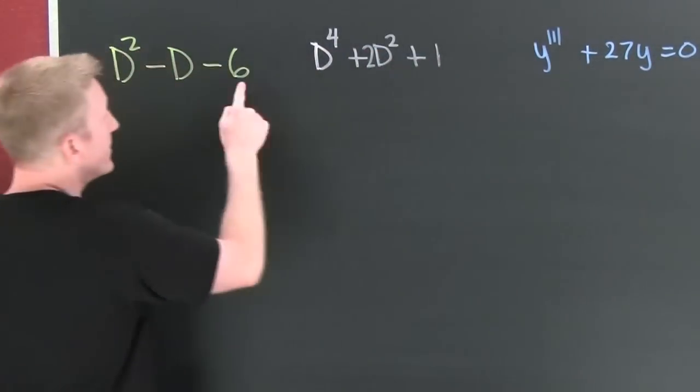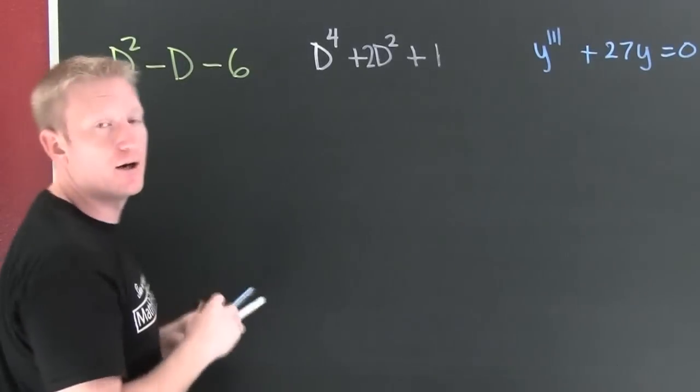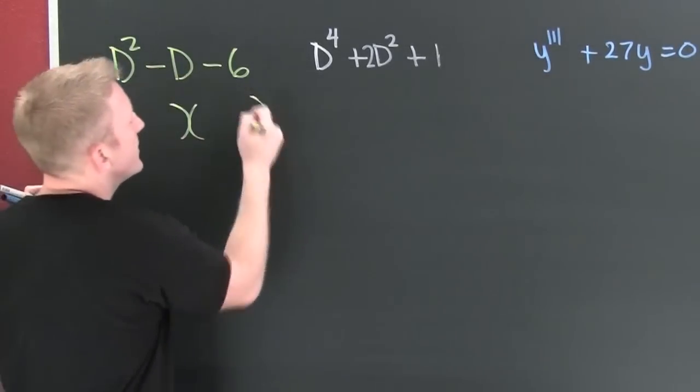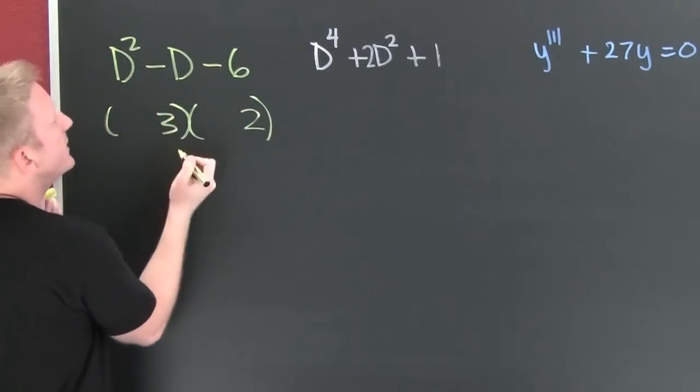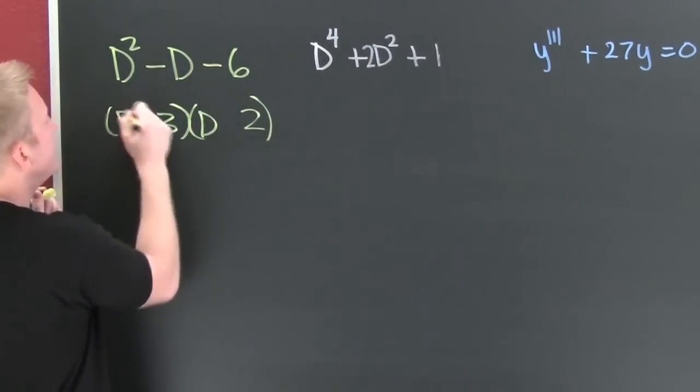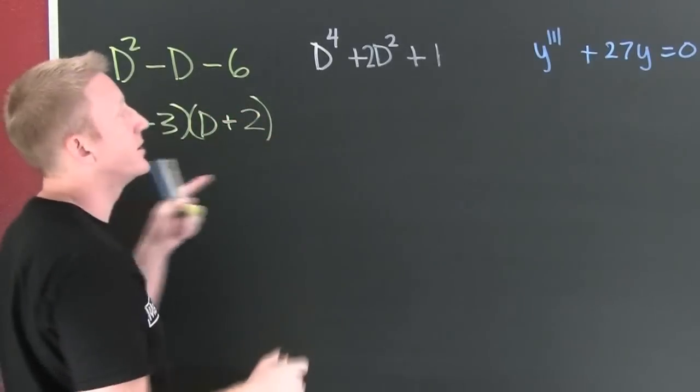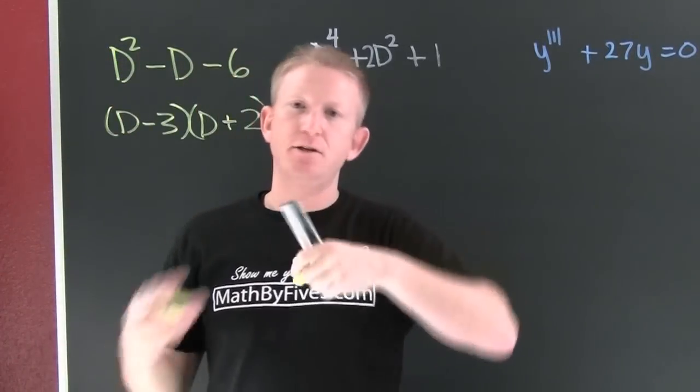So I'm looking for the factors of six and subtracted be one. Are there any? Yeah, you got two and three D and D. The signs are different, the big one's negative, negative positive.